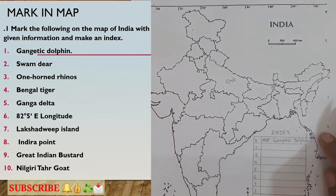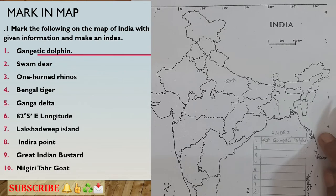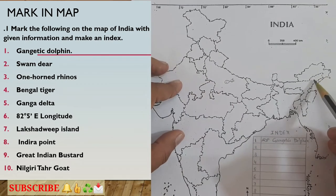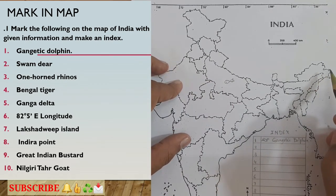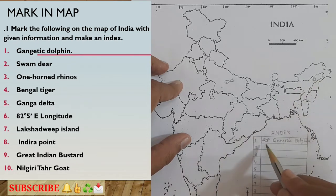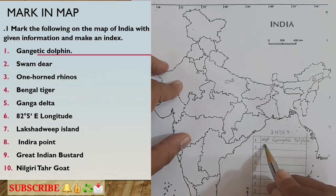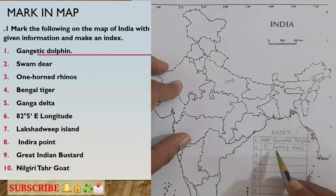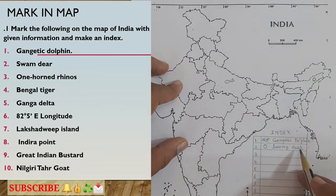The next thing asked is swamp deer. The swamp deer is available or seen in Assam state. I will select a circle as the symbol for swamp deer. I will draw a circle on Assam in the map and in the index I will write 'Swamp Deer' next to the circle symbol. Wherever the circle appears, the swamp deer can be seen.